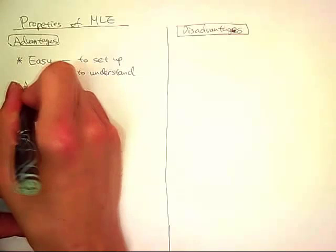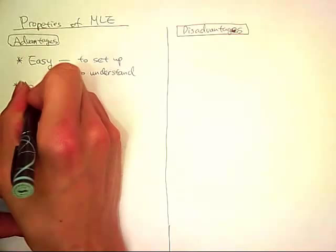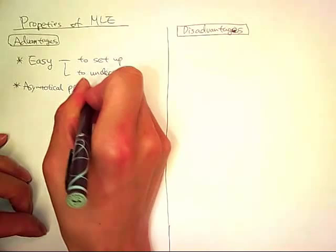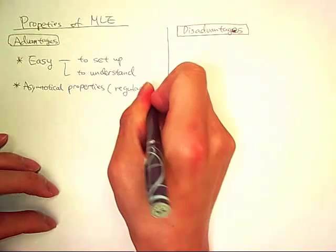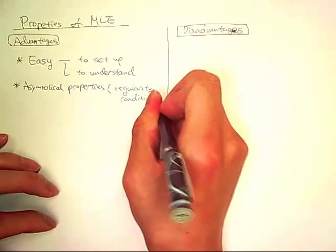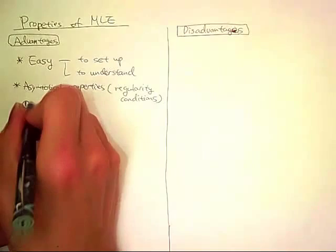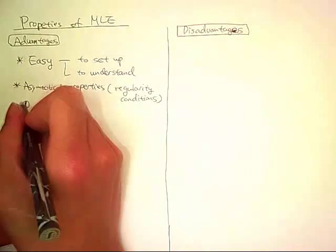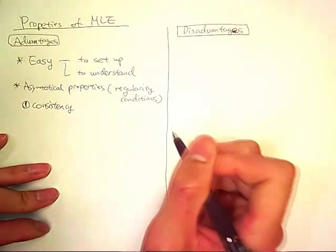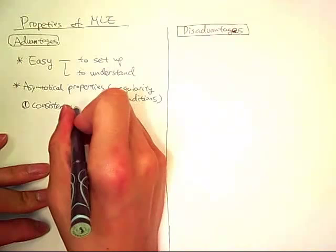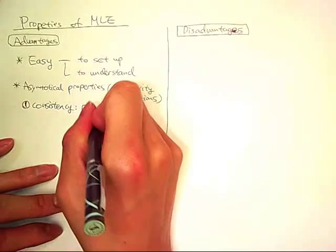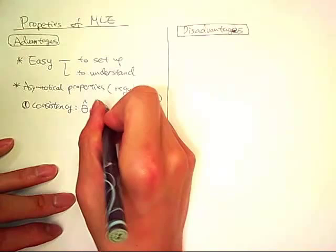Next one is asymptotical properties. Under regularity conditions, the first asymptotical property is consistency. It means MLE of theta asymptotically almost surely converges to the true value of the parameters.